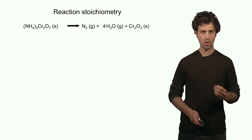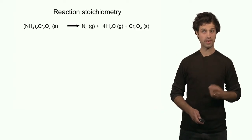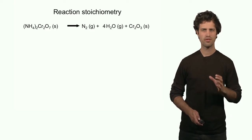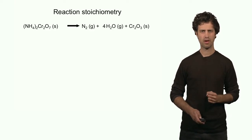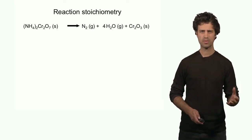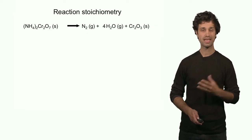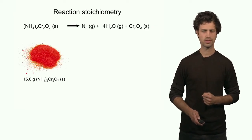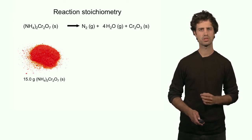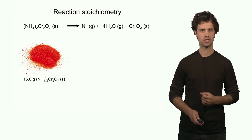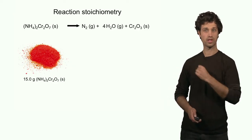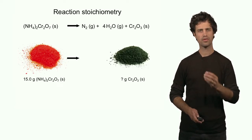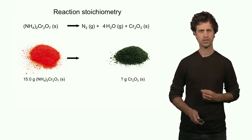Here we see the reaction of ammonium dichromate that is formed into chromium 3 oxide. A very important type of calculation in chemistry is to determine the amount of product that I can form given a certain amount of starting material. For instance, what if I have 15 grams of the reactant — this very beautifully looking orange powder — how many grams of chromium 3 oxide can I form?